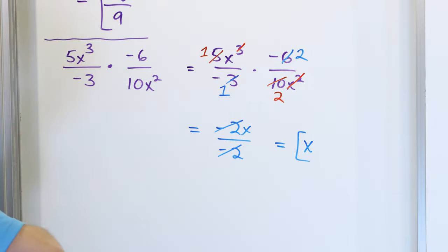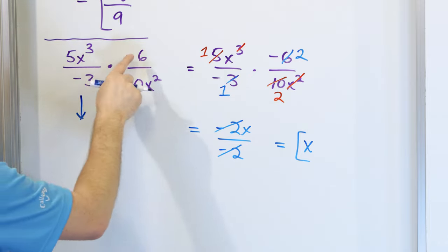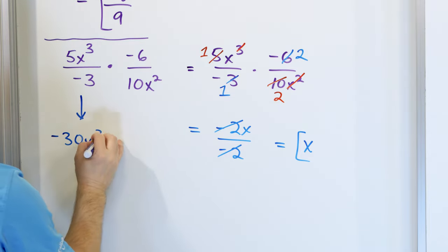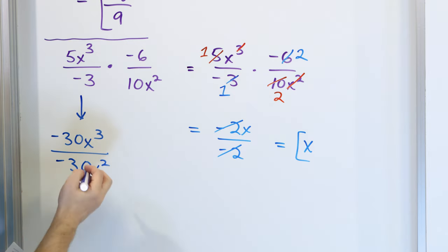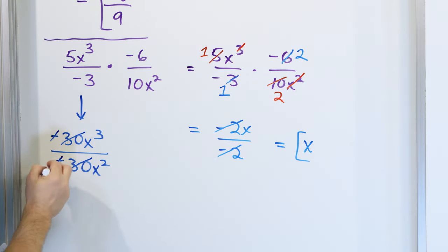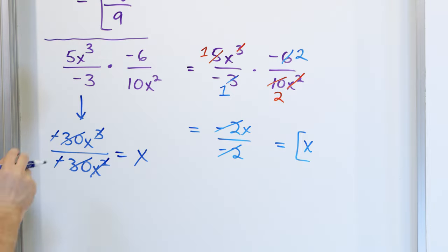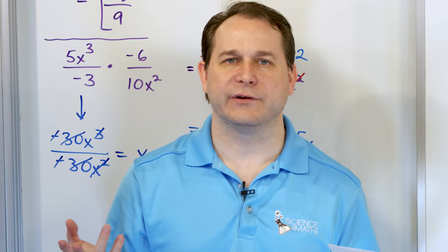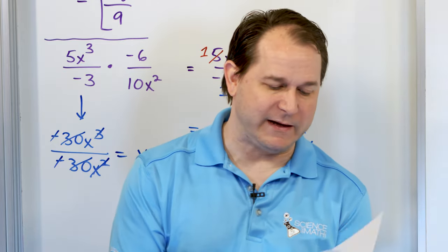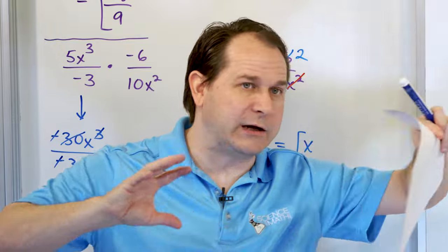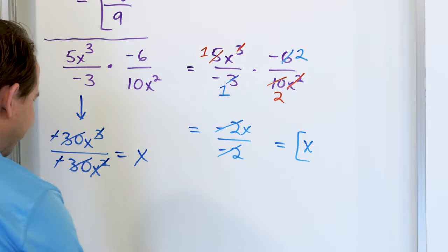Just this one time, let's verify by multiplying out the original: 5 times -6 gives -30x³ on top; -3 times 10 gives -30x² on the bottom. The 30s cancel, the signs cancel, x² cancels, leaving one x — so the final answer is just x. You can always get the answer by multiplying tops and bottoms first and then simplifying, but get in the habit of cross-simplifying ahead of time, because it's a very important skill.